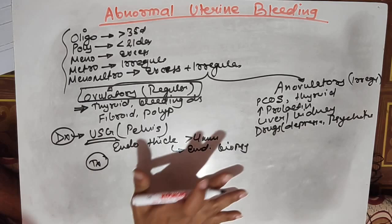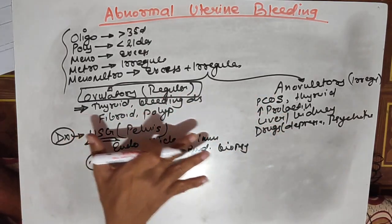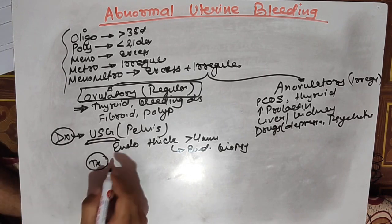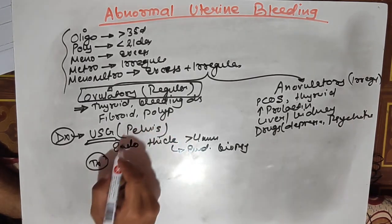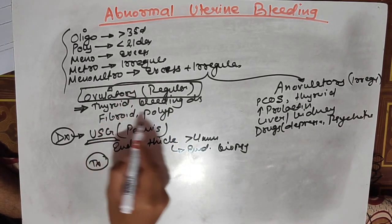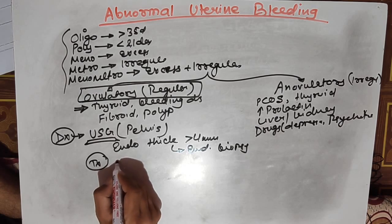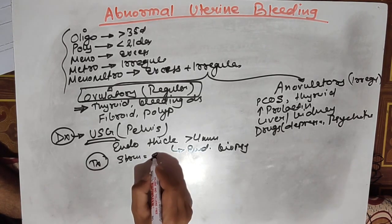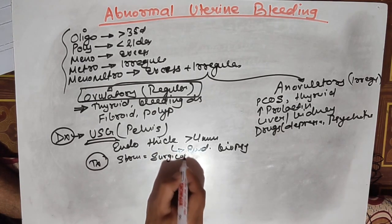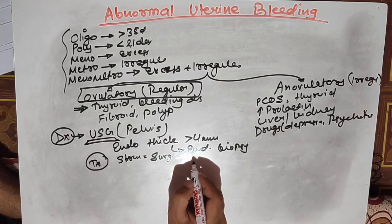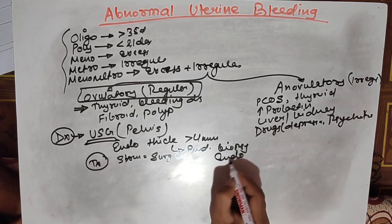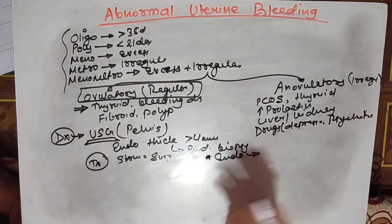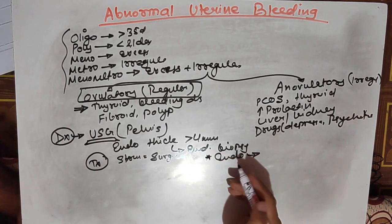Coming to treatment modality — since there are different causes of abnormal uterine bleeding, we should treat according to the cause. If the cause is a structural abnormality in the uterus like fibroid or polyp, we go for surgical resection. If there is an endocrine abnormality, we try to revert it by correcting or antagonizing the hormone level.